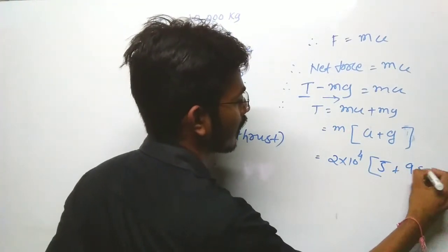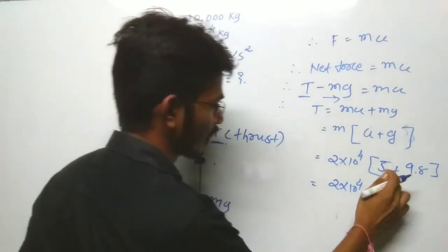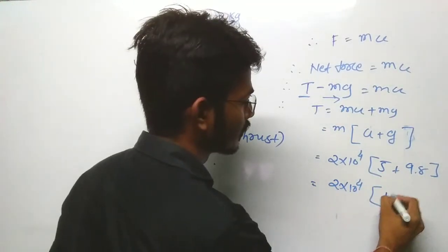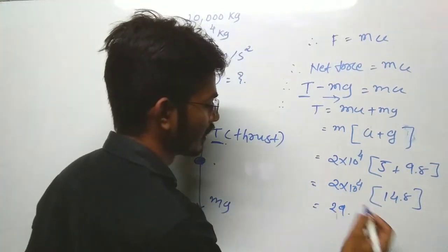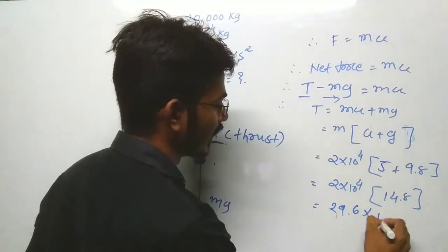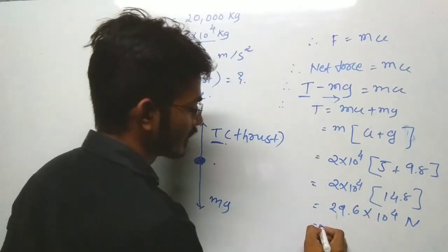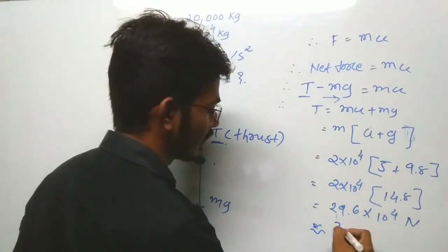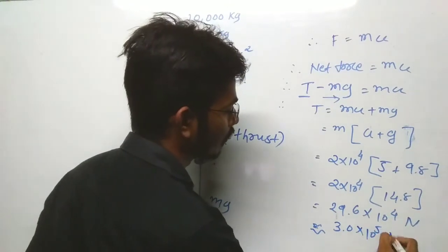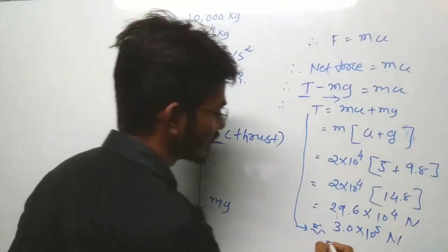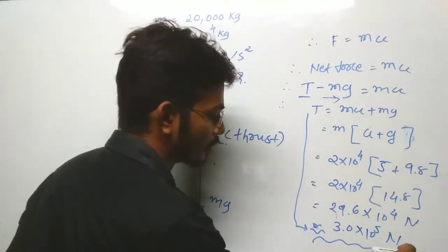So simplification kerna hai: 2×10⁴... Newton, which is nearly equal to 3.0×10⁵ Newton. So we can write, thrust kitna jayega? Answer: 3.0×10⁵ Newton.